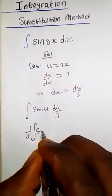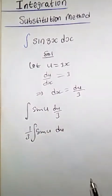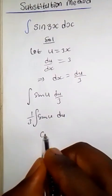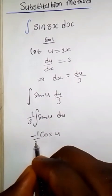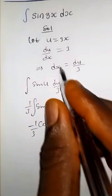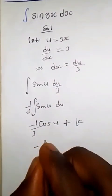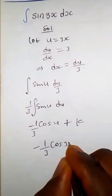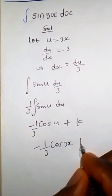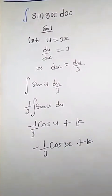Whenever we integrate sin(u), we have negative cos(u) plus some constant of integration. Now since u equals 3x, we substitute it into cos(u), so we have negative cos(3x) over 3 plus a constant of integration. Thanks for watching, subscribe!